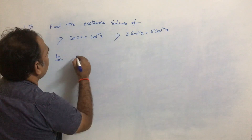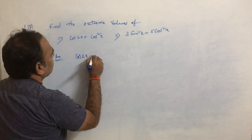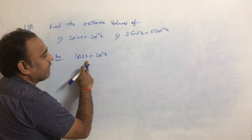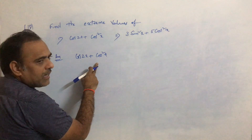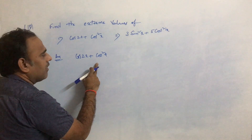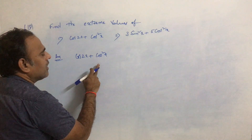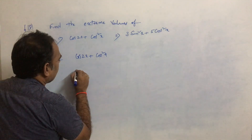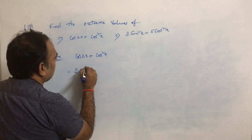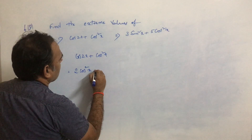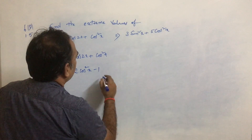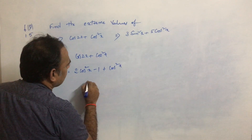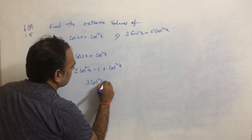Write down the given expression: cos2x plus cos²x. We need to convert this into either cosx, cos²x, cos³x, sinx, sin²x, or sin³x. Cos2x can be written as 2cos²x minus 1, so cos2x plus cos²x becomes 2cos²x minus 1 plus cos²x, which is finally 3cos²x minus 1.